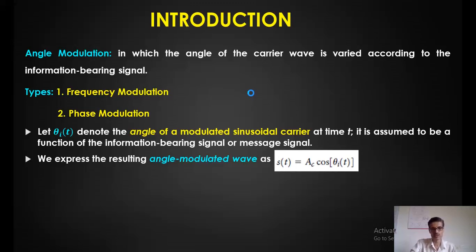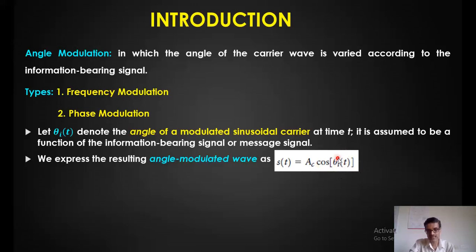We can represent the angle modulated wave mathematically as s(t) = Ac·cos(θᵢ(t)), where Ac is the amplitude of the carrier which is kept constant, s(t) is the modulated signal, and θᵢ(t) is the angle part. This angle part is proportional to the amplitude of the message signal.